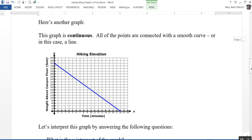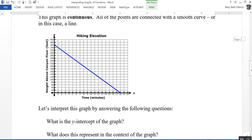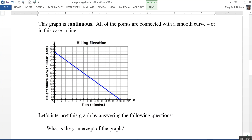Here's another graph. This is a continuous graph. In other words, all of the points in this graph are connected with a smooth curve, or in this case, they're connected by a line. Let's take a look and interpret this graph with the following questions.